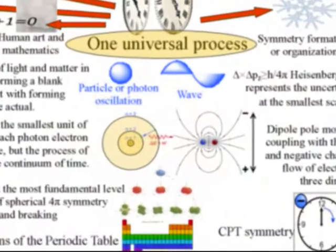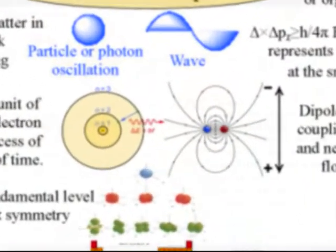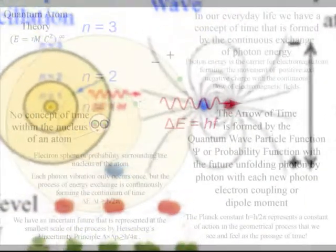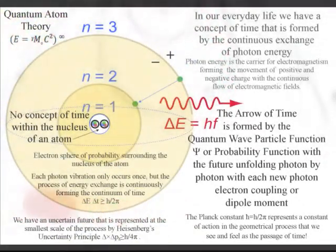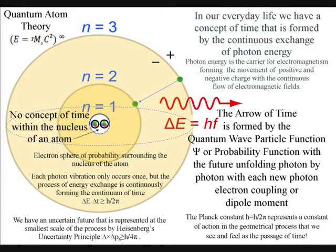As we move up the diagram, we have an image of a photon-electron coupling and a dipole moment. These are two different ways of explaining the same process with the future unfolding at the smallest unit of energy, the light quanta.